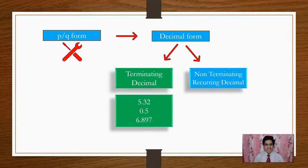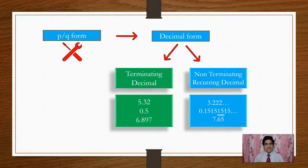For example, the number 10 — is it Terminating or Non-Terminating Recurring? It is a Terminating Decimal because you can write 10 as 10.0. Examples of Non-Terminating Recurring are 3.222 and so on, 0.151515 and so on, and 7.65 bar.